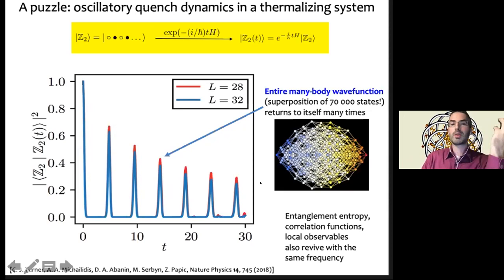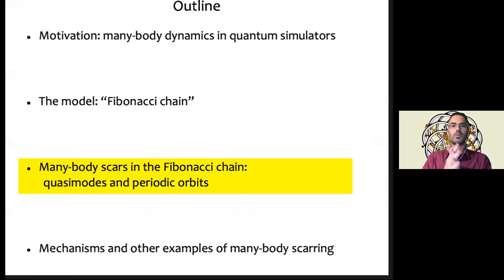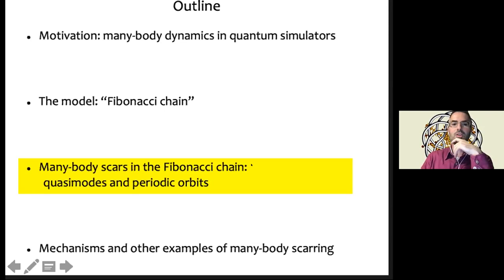How do we make sense of this? Can we explain and rationalize this behavior? That moves me to the next part: trying to make sense of the phenomenology seen in numerics and real experiments. I want to argue there's a connection between this behavior and scarring behavior.